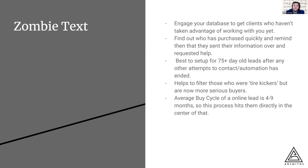Between two to three months in, they've probably already gone through their tire kicker phase and thought about the logistics of how this actually works. They're doing some internal planning on their own, and now is the best time to get back in there and re-engage them — to move them from just thinking about it to this being something they actually want.